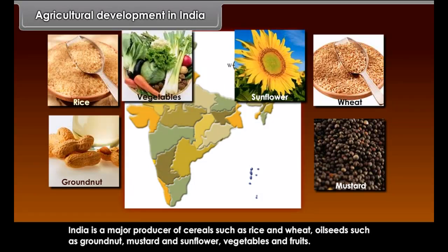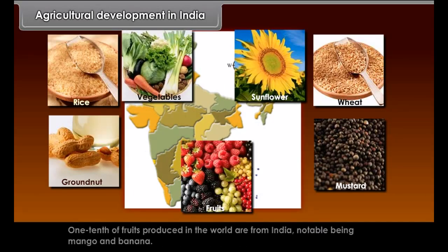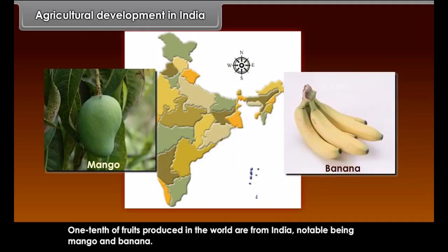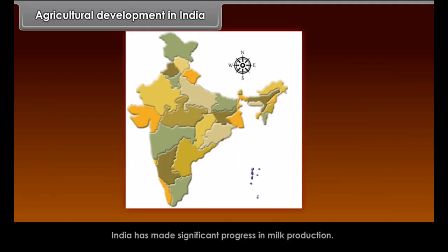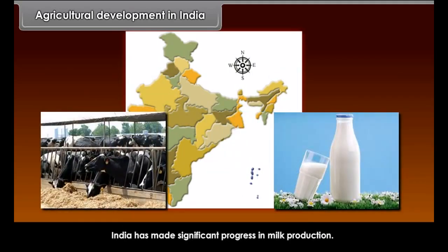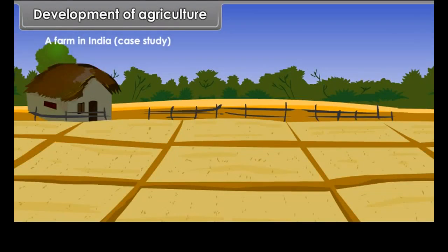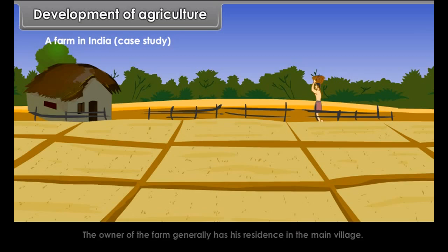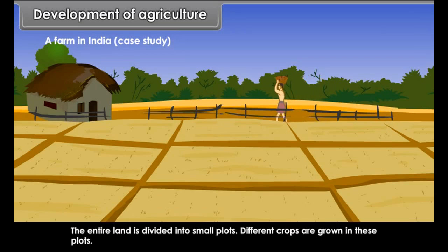India is a major producer of cereals such as rice and wheat, oil seeds such as groundnut, mustard and sunflower, and vegetables and fruits. One tenth of fruits produced in the world are from India, notable being mango and banana. India has made significant progress in milk production and is the largest producer of milk in the world.